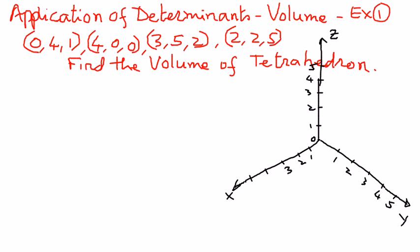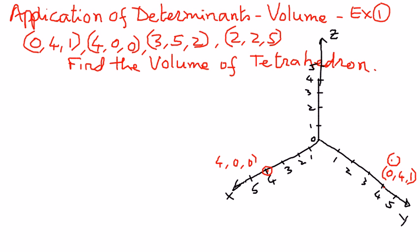Starting from the first point (0, 4, 1): 0 on the x-axis, 4 on the y-axis, and 1 on the z-axis — that point will be somewhere there. The second point is (4, 0, 0): 4 units on the x-axis, 0 on the y-axis, 0 on the z-axis, so it sits right on the x-axis at (4, 0, 0).